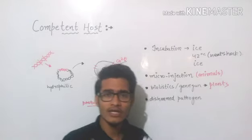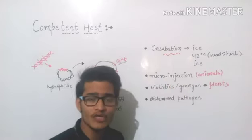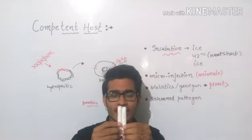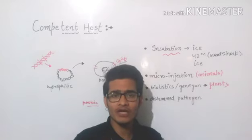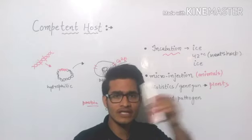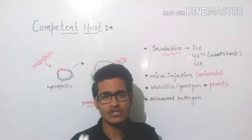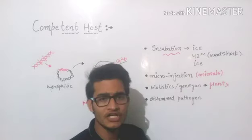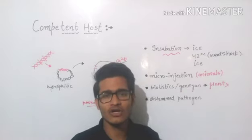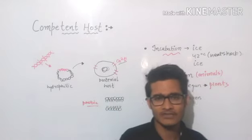After treating both with these fluctuating environments — alternating ice bath and heat shock at 42 degrees Celsius — the cell will take up the DNA inside it. This is the incubation method: incubate the recombinant DNA and host cell together, put them in ice, then heat shock at 42°C, then ice, then heat shock, and the cell will take up the DNA.